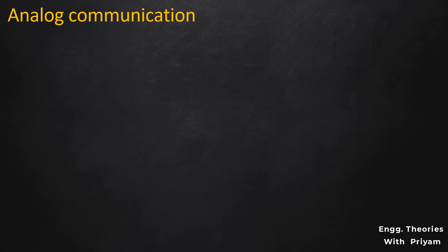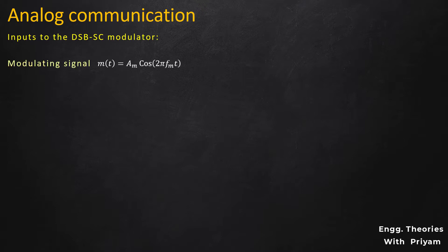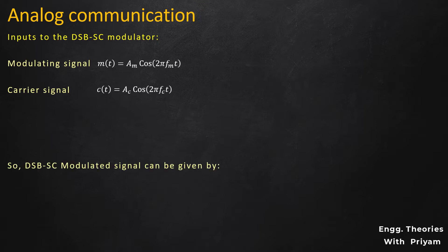For the generation of the SSBSC modulated signal using this DSBSC modulator, the input to the DSBSC modulator was the message signal or modulating signal M(t) = AM·cos(2π·FM·t) and the carrier signal C(t) = AC·cos(2π·FC·t). The generated DSBSC modulated signal S(t) = (AM·AC/2)·cos(2π(FC−FM)t) + (AM·AC/2)·cos(2π(FC+FM)t).